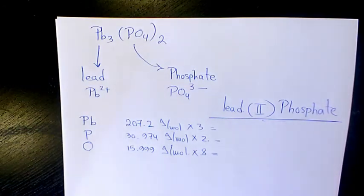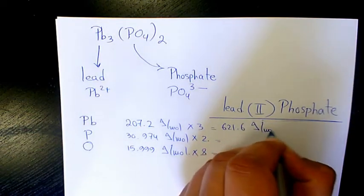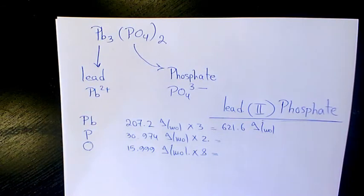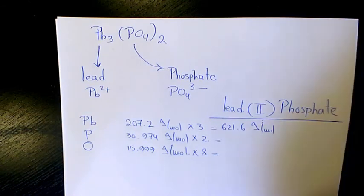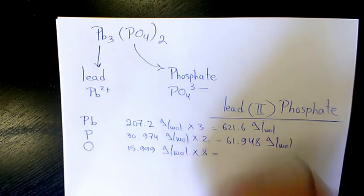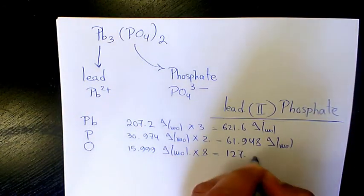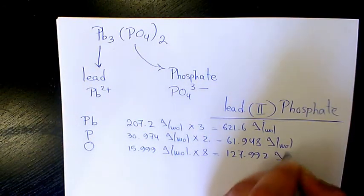So 3 times 207.2, that will be 621.6 grams per mole. 30.974 times 2 will be 61.948 grams per mole. 15.999 times 8, which is 127.992 grams per mole.